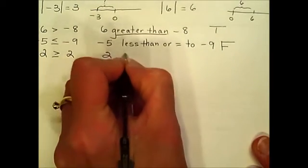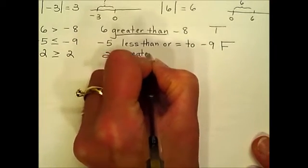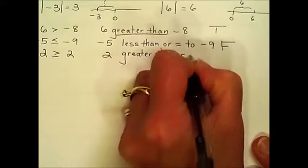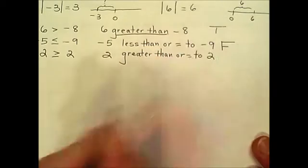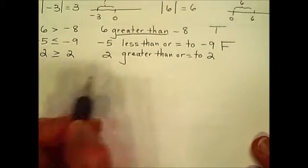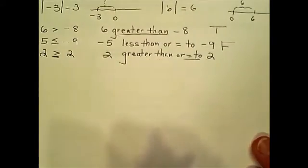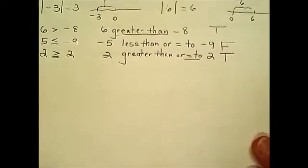So that statement would be false. If we have an inequality expressed as two is greater than or equal to two: two isn't greater than two, but the condition with the equal to — indicated by the straight bar underneath — is the case, and so we would answer that this is true.